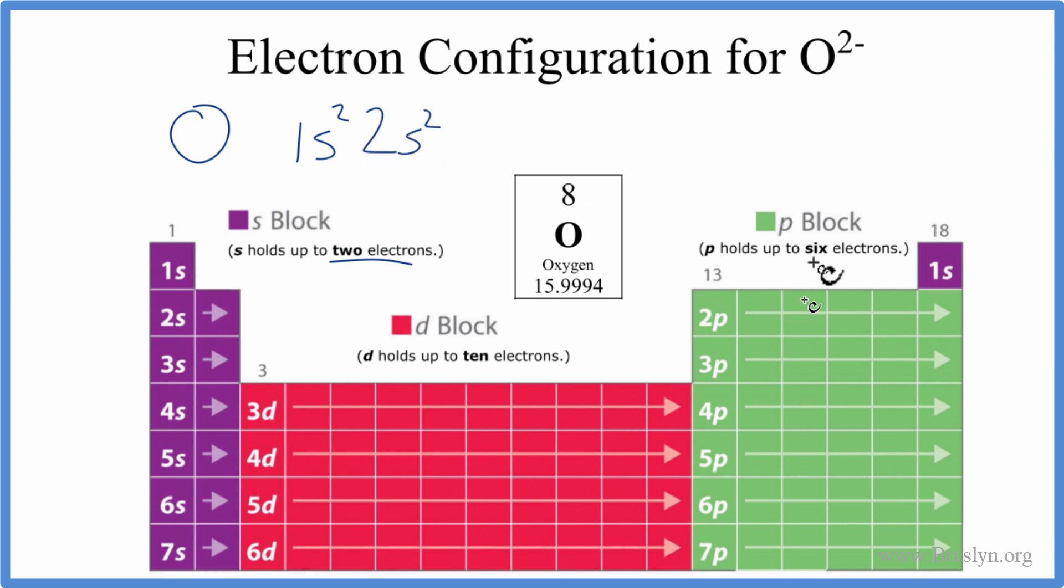Then we go to the p. p can hold up to six electrons: 1, 2, 3, 4, 5, 6. But we only need eight electrons in the configuration for oxygen. We already have four, so we'll put 2p⁴, and these numbers add up to eight, the number of electrons in a neutral oxygen atom.